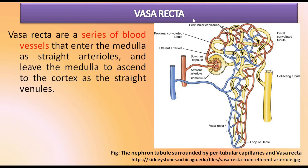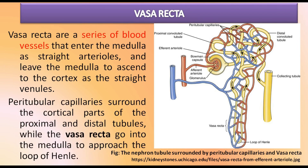The vasa recta is a series of blood vessels that enter the medulla as straight arterioles and leave the medulla to ascend to the cortex as straight venules. Peritubular capillaries surround the cortical parts of the proximal and distal convoluted tubules, while the vasa recta go into the medulla portion to approach the loop of Henle.